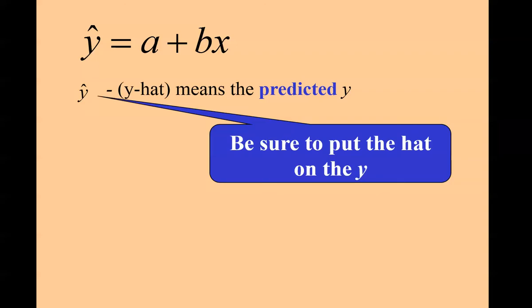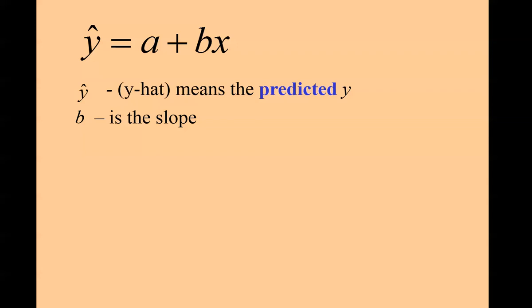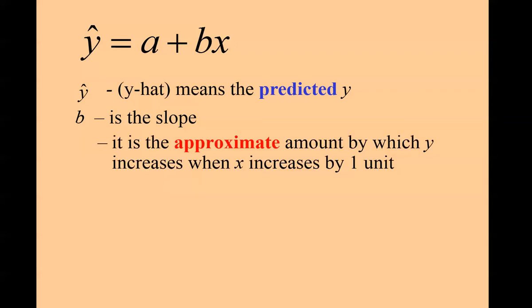Y hat is an actual symbol and it represents the predicted Y, the predicted value of it, and you do need to make sure the hat is there. B we refer to as the slope. One of the things in statistics we want to get used to understanding is a lot of times they'll ask us to interpret things, describe what this means.